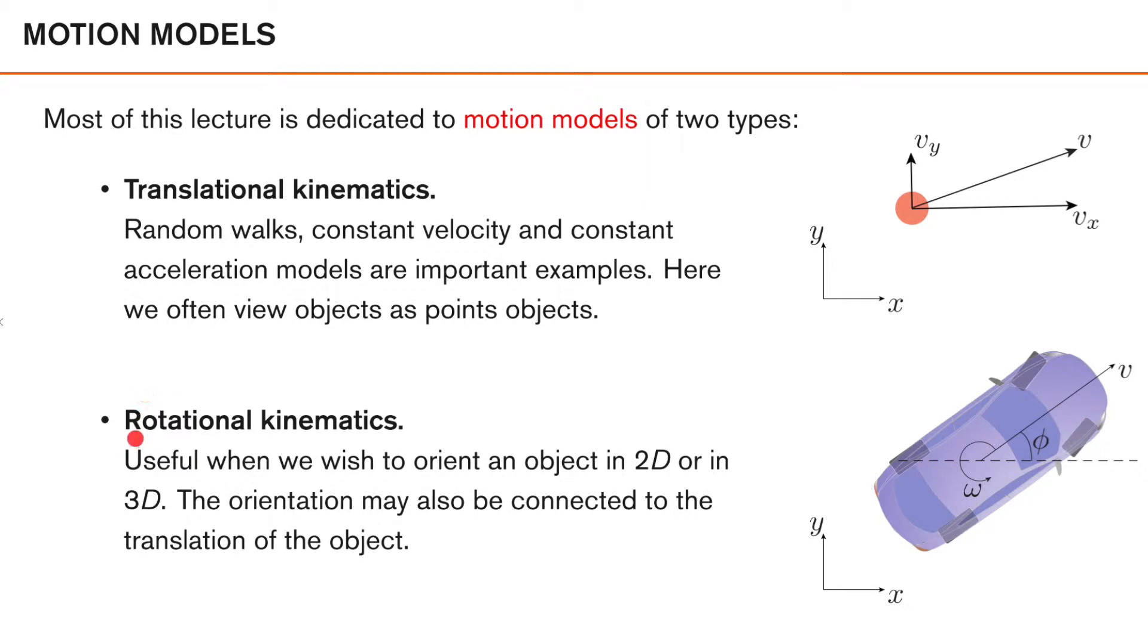The second group contains models that describe rotational kinematics. This can be just pure rotations in 2D or 3D, but they can also be a combination of rotations and translations. Sometimes these orientations can be connected to the translation of the object, but this is not a requirement. Here is a typical example where we use this type of model, and that is to describe the motion of a car.